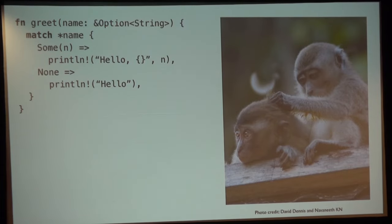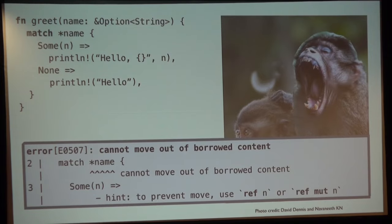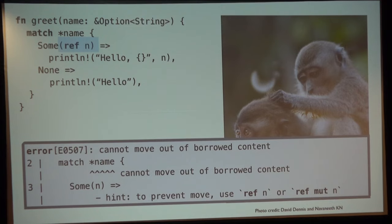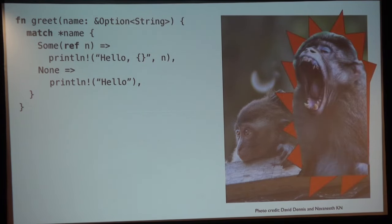Now it's going to compile — except there's another problem: I can't move out of borrowed content. When I say Some(n), I'm taking ownership of the string inside the option, but I've only borrowed this option. I can't take ownership of something I borrowed. So I have to put ref to tell the compiler I want to borrow the string that's inside the option, and now my code is going to work. This is something that probably every experienced Rust programmer has experienced on a daily basis. When you know the rules it might not feel like a big deal, but if you're coming new to Rust, it's a whole other story.